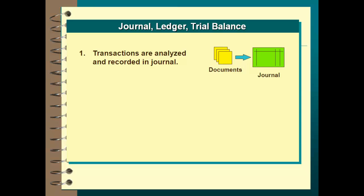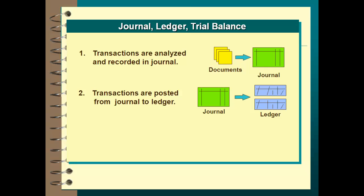To just kind of recap the accounting cycle — first off, things happen. The first place we record them is in the general journal. From the general journal, we take them and post them to the general ledger. And at the end of the period, we list all of our accounts from the ledger. We make a list to make sure the debits and credits equal, and we call that the trial balance. Once we have the trial balance prepared and we're ensured that everything is in balance, then we can go in and do our financial statements.